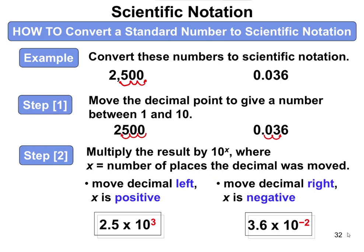Another way to think about it: large numbers always have a positive exponent. So 2,500 is greater than 1, so it's going to have a positive exponent. A number less than 1 would have a negative exponent. So 2.5 times 10 to the 3 would be the answer — two significant figures, because we had two significant figures in our starting number.